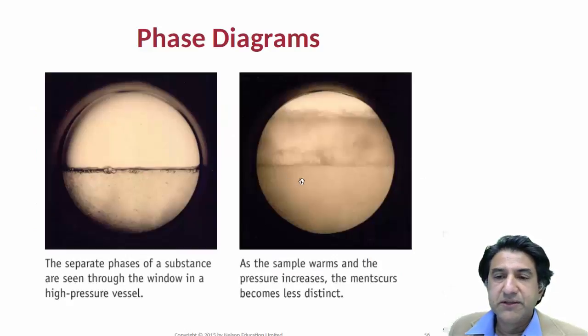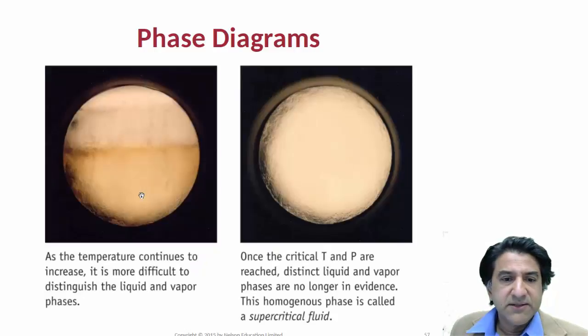We are starting over here, we're moving along the coexistence line, the boiling point line, and we see that the meniscus starts to disappear. It becomes all frothy and foamy. As it continues increasing, it becomes more and more difficult to distinguish liquid and vapour.